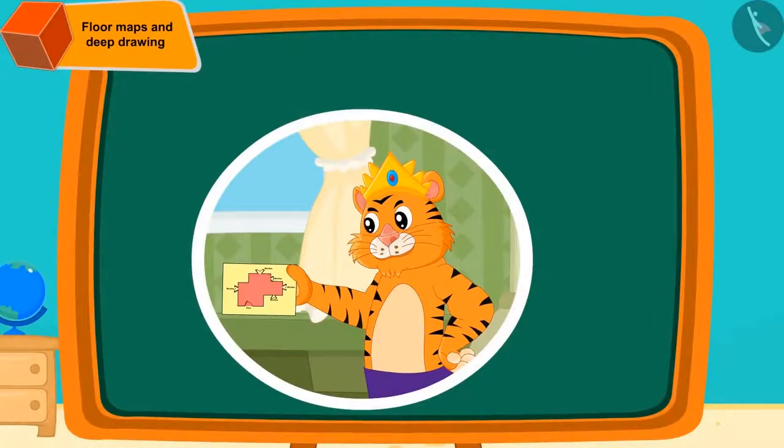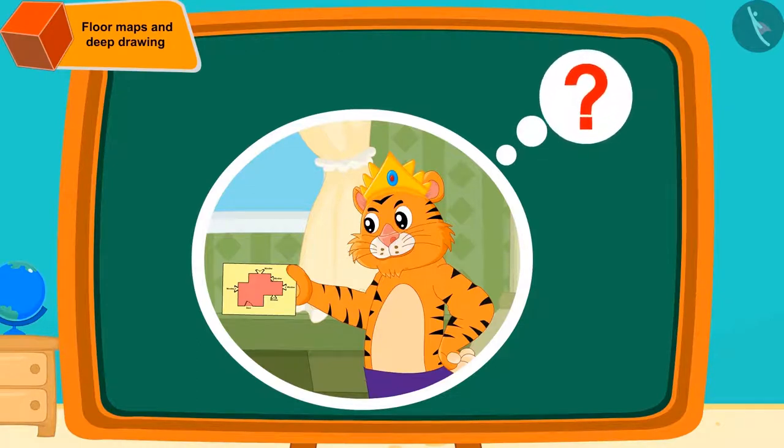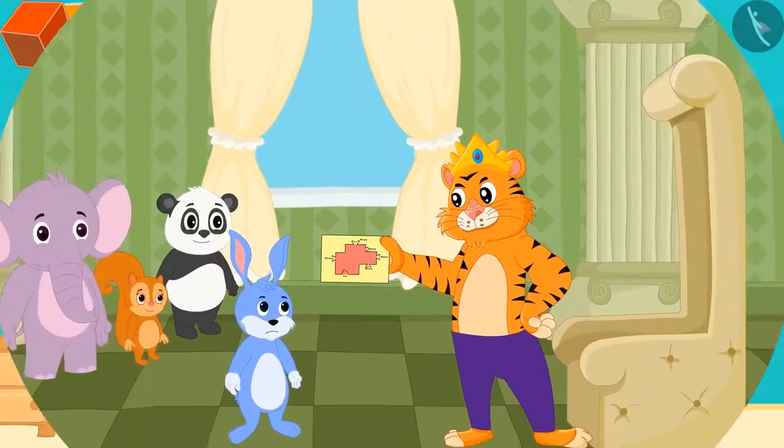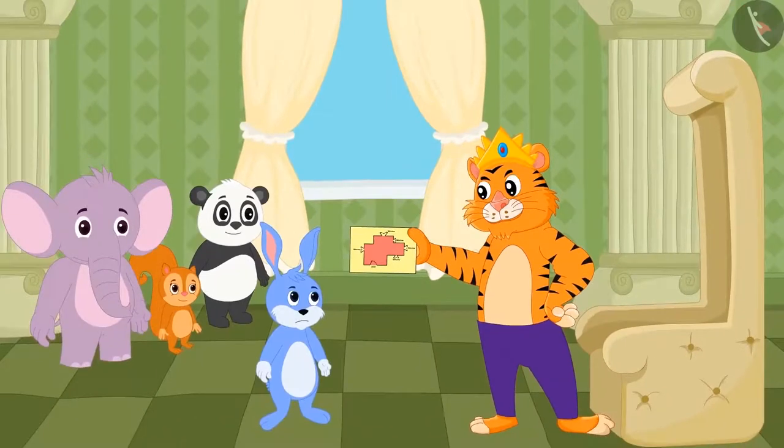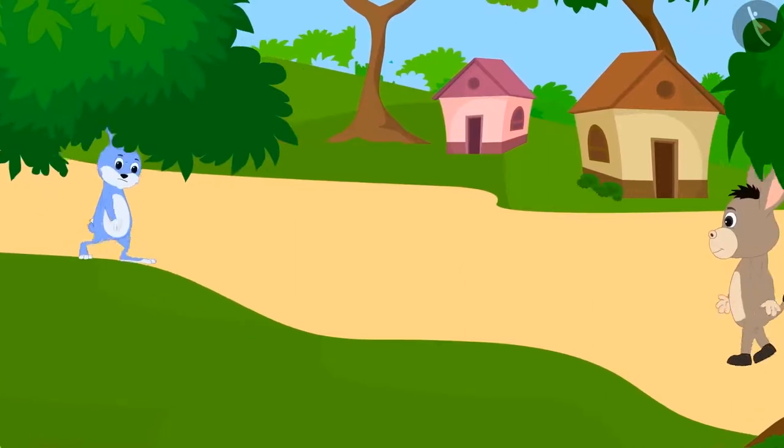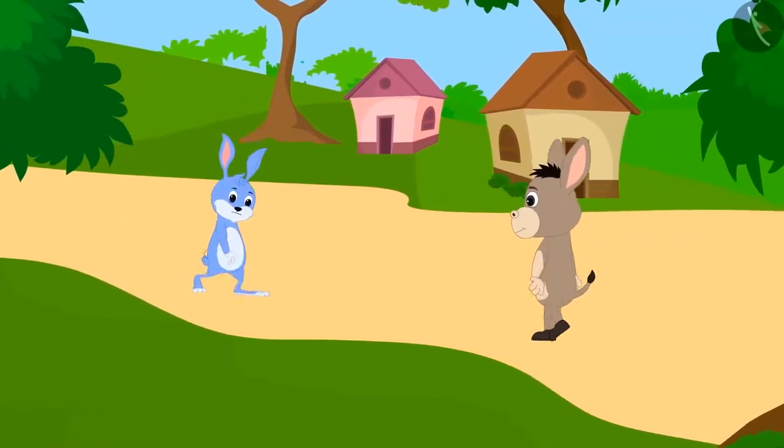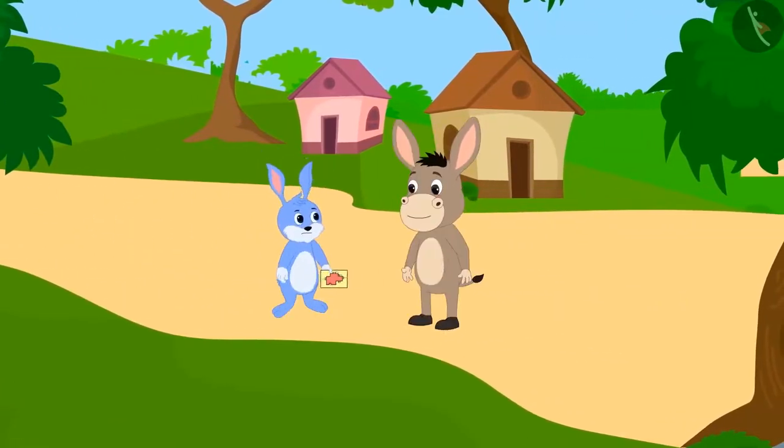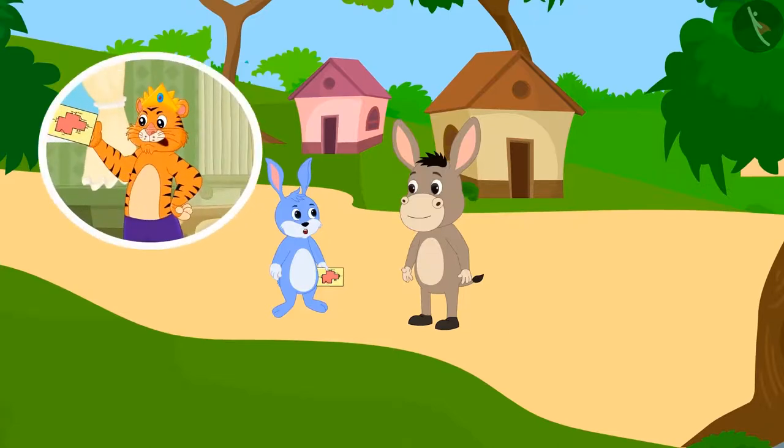The king liked the floor map that Banni had made, but could not find out how the room would look like and how high the windows would be from the map of the floor. So, he did not reward Banni. Banni was returning home with a sad face when he saw Bholla the donkey on the way. Bholla asked the reason for Banni being depressed, and Banni told him the whole story.